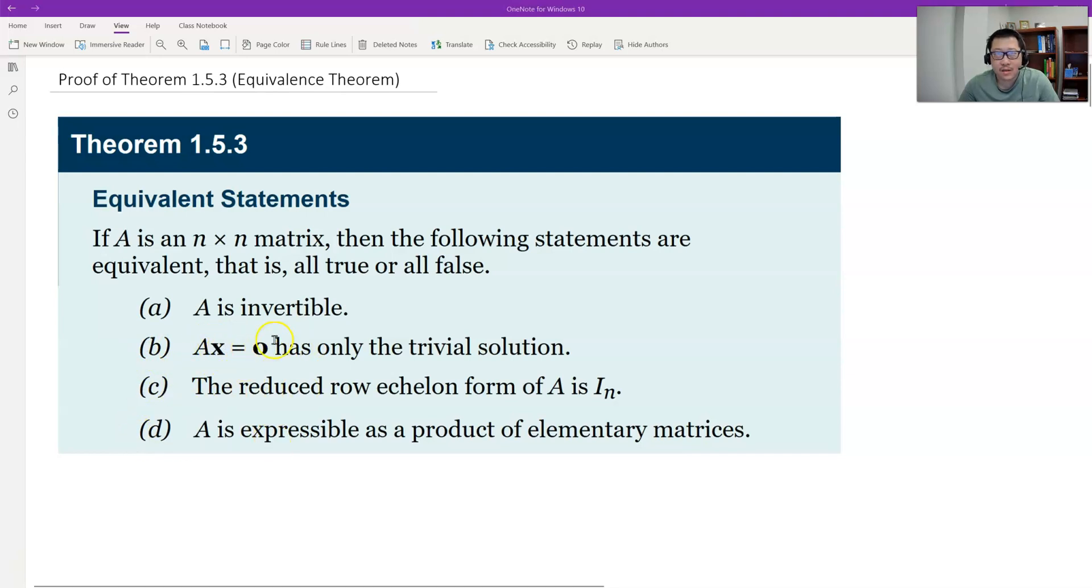B is a homogeneous linear system. Ax equals zero has only the trivial solution. Equivalence means this: if A is invertible, then we know this linear system has only the trivial solution, and vice versa. If the homogeneous linear system has trivial solution only, then A should be invertible. From A we can get B, and from B we also can get A. So therefore these two statements we call equivalent.